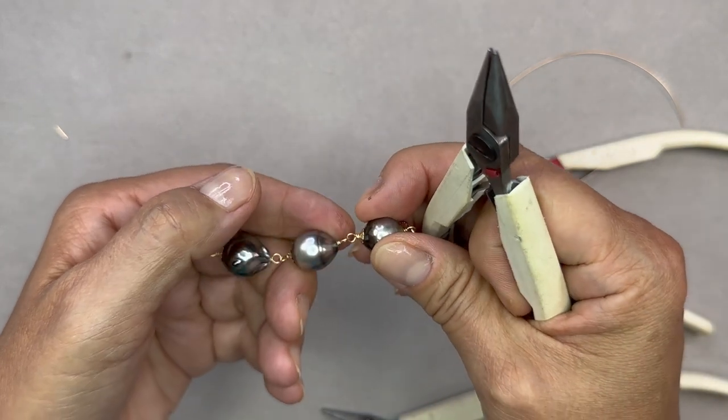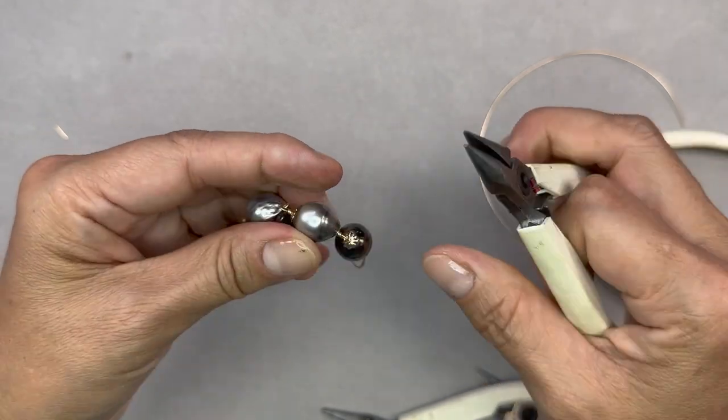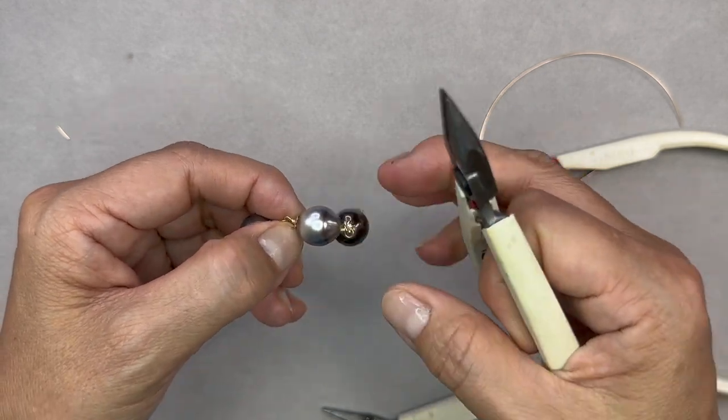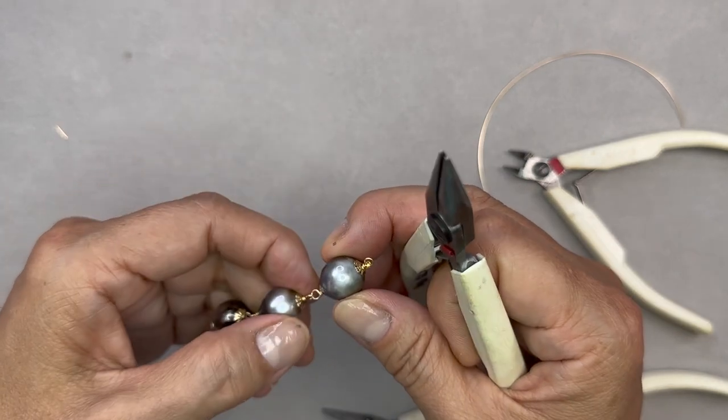Now that I'm done wrapping the pendant I'm using my chain nose pliers to tuck the ends in. You can tuck the ends in along the way as you go but it is a time saver to pick up the tool one time and do all the ends all at once.